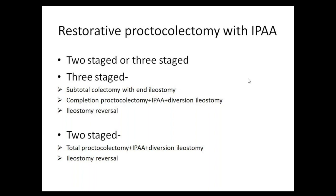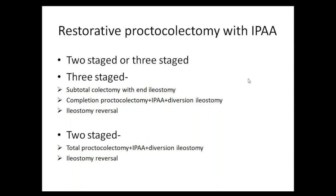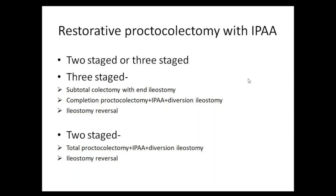A diversion ileostomy is almost standard after any pouch surgery in ulcerative colitis. In contrast, for FAP (familial adenomatous polyposis) in an elective setting, a diversion ileostomy may not be required because these patients are well-compensated and nutritionally replete without previous steroid use. As a rule, surgery for ulcerative colitis must be at least two-stage; in emergency settings, three-stage surgery is mandated as the standard of care.